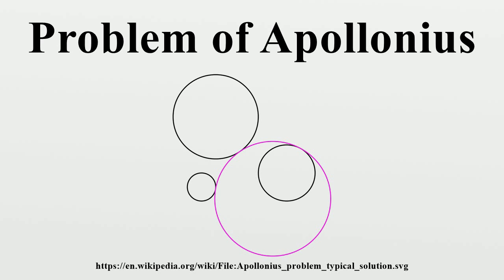Another approach uses Lie sphere geometry, which was developed by Sophus Lie. Algebraic solutions to Apollonius' problem were pioneered in the 17th century by René Descartes and Princess Elizabeth of Bohemia. Although their solutions were rather complex, practical algebraic methods were developed in the late 18th and 19th centuries by several mathematicians, including Leonhard Euler, Nicholas Fuss, Carl Friedrich Gauss, Lazarus Carnot, and Augustin-Louis Cauchy.